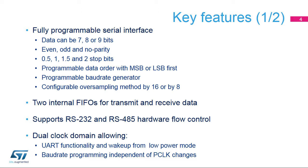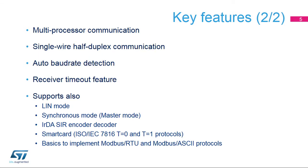The RS-485 DE or driver-enabled signal is also supported. The USART supports a dual-clock domain, allowing wake-up from stop mode and baud rate programming independent of the peripheral clock or PCLK. This also allows the peripheral clock to be throttled along with the core clock without disrupting communications. The USART features a multiprocessor mode, which allows the USART to remain idle when it is not addressed. In addition to full-duplex communication, single-wire half-duplex mode is also supported.